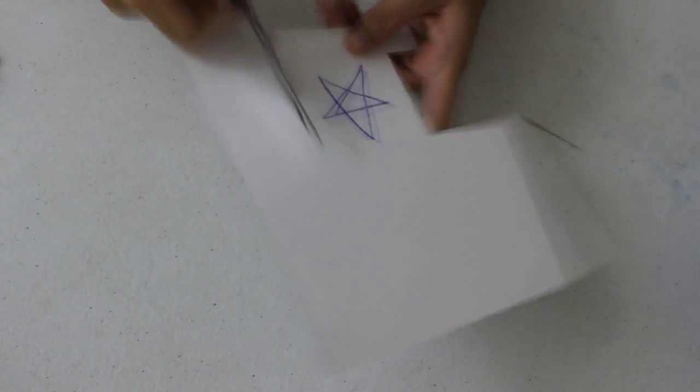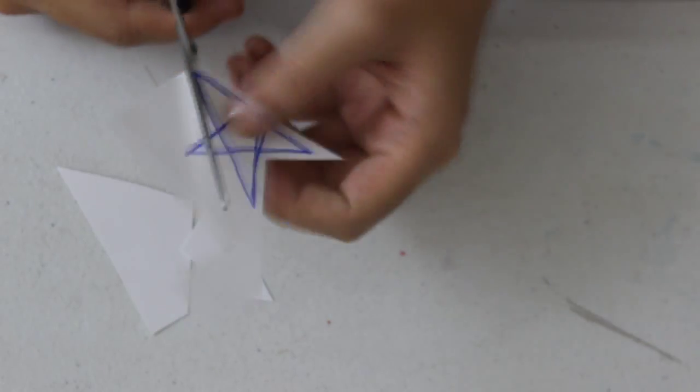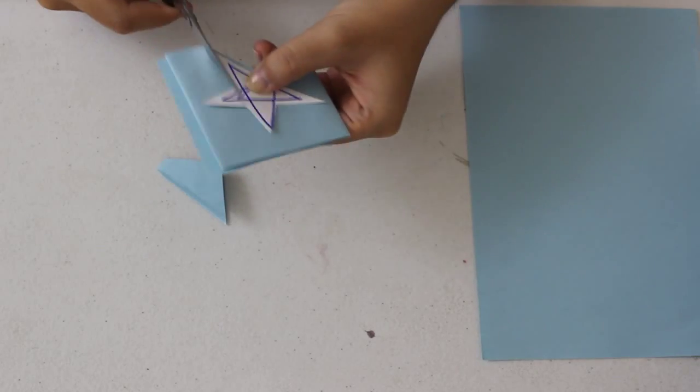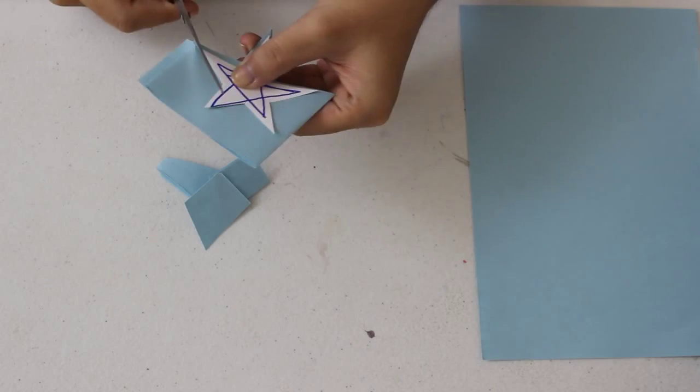First we are going to cut out a star-shaped stencil. Then use that as a guide to duplicate the rest of the stars.